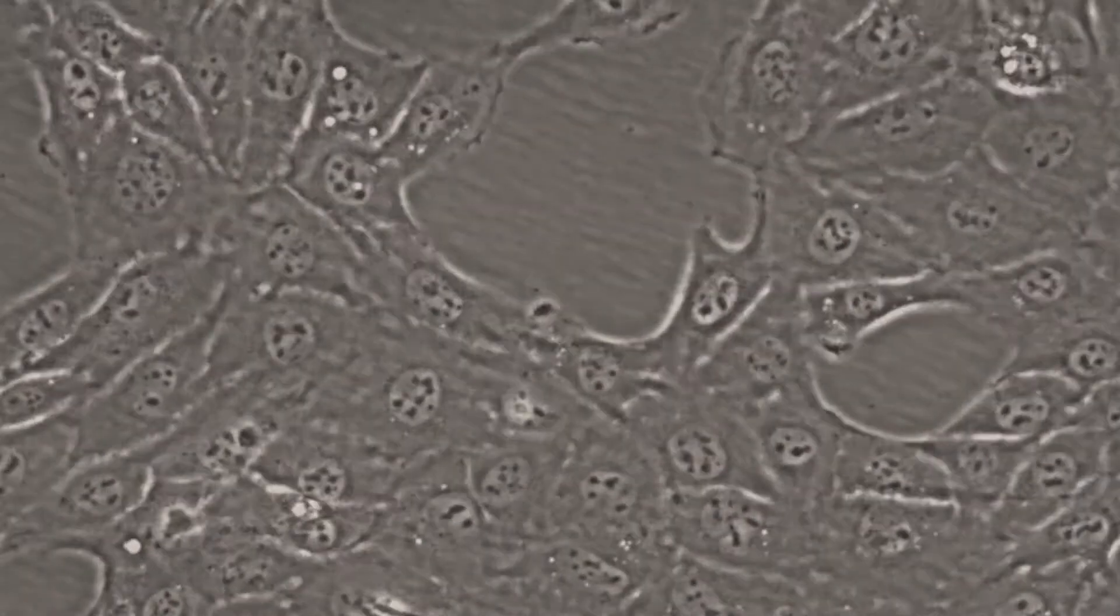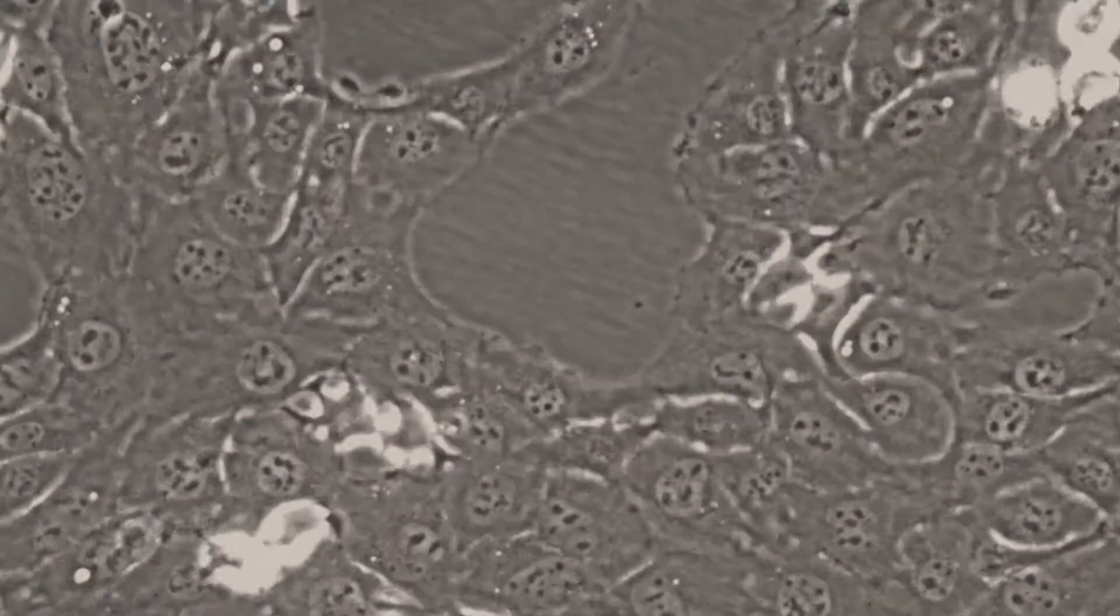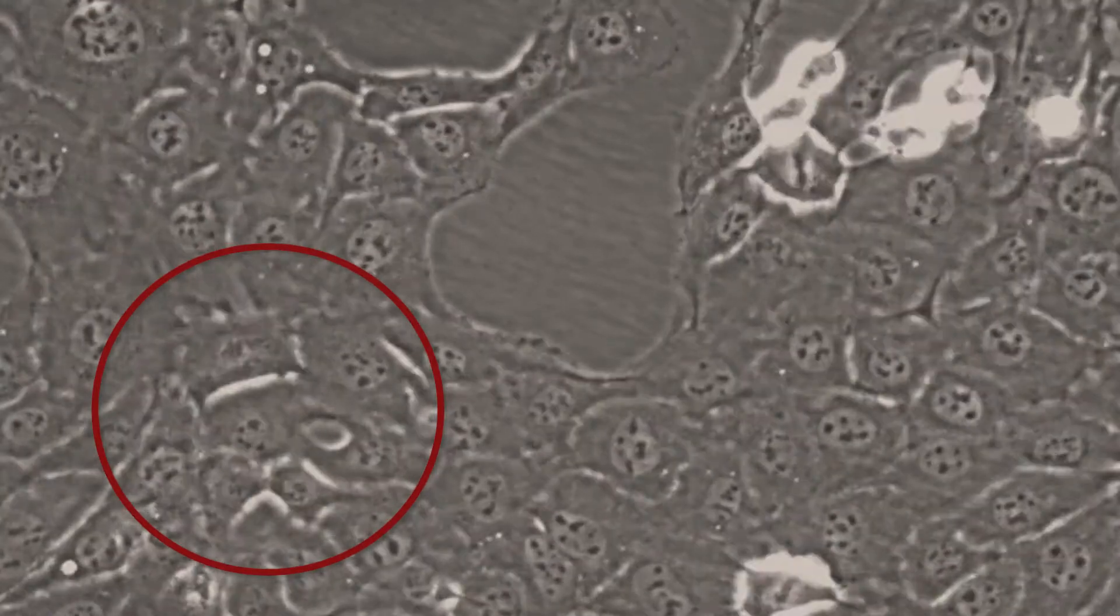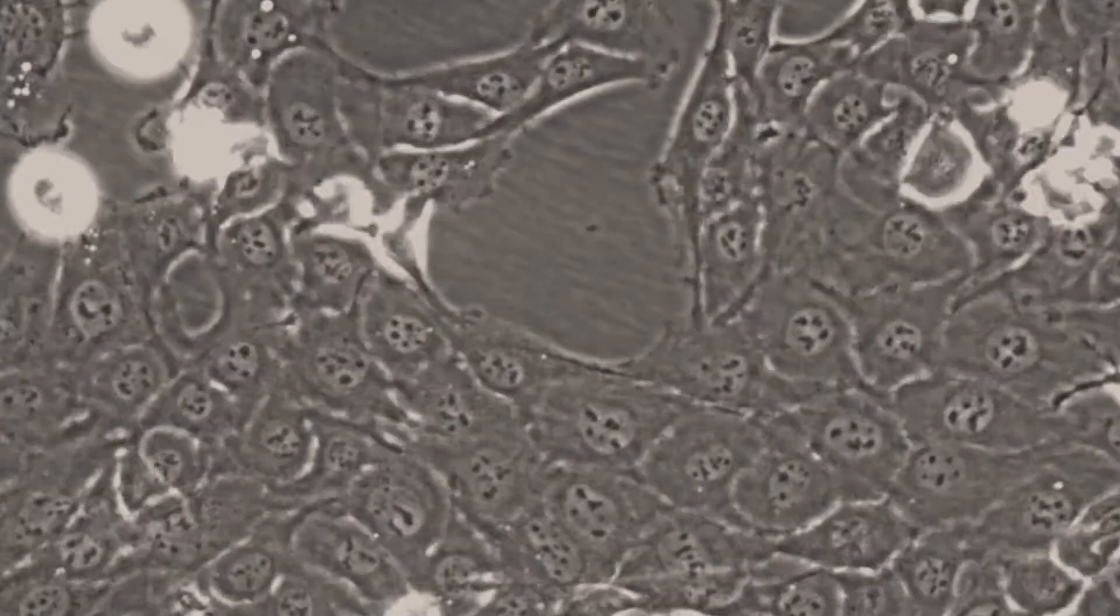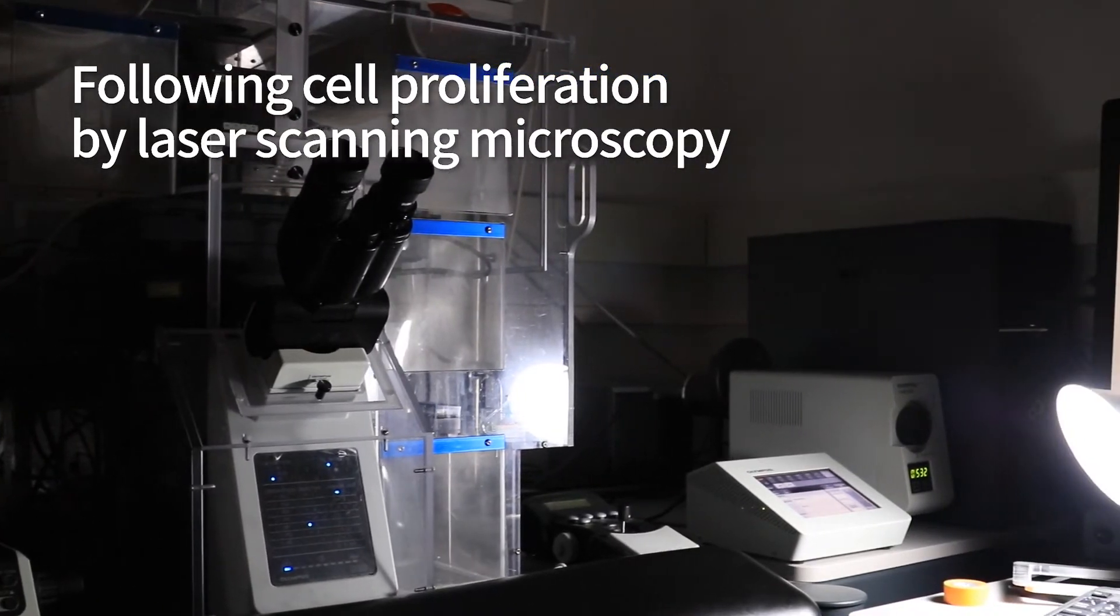Cells proliferate by binary fission. The capacity of cells to duplicate themselves, utilizing the information encoded in the genome and raw materials from the environment, is nothing short of magic.